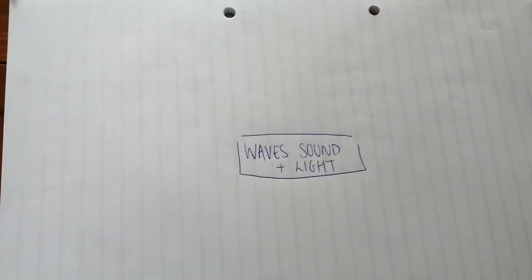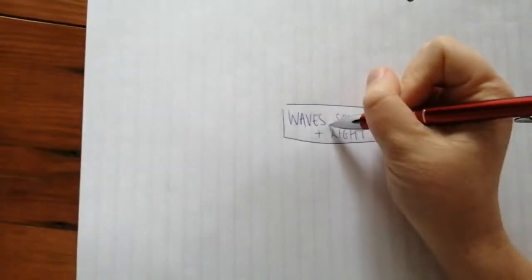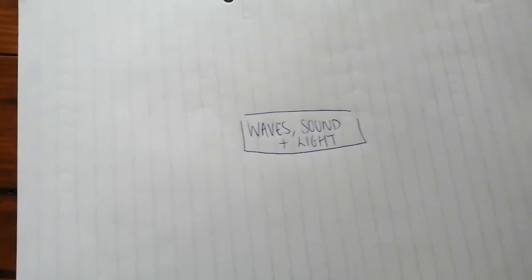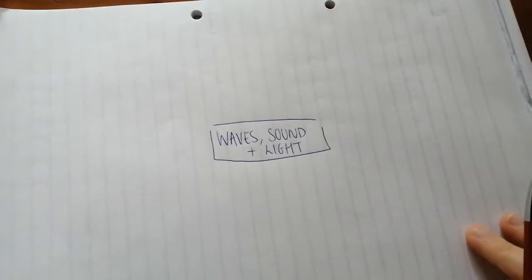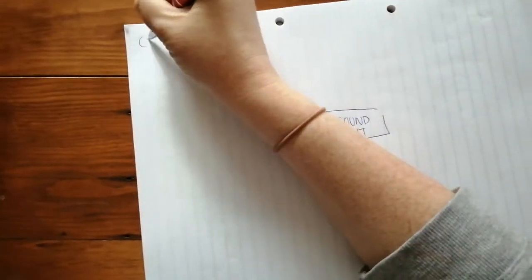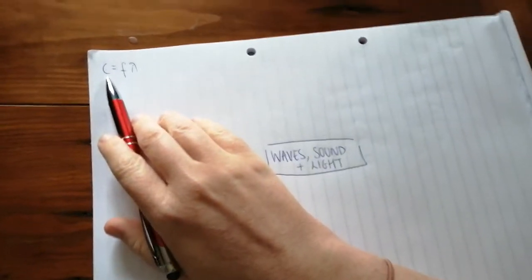Okay, so this week we're going to be looking at the main calculations that come up in the waves, sound and light section of the course. There's lots of theory which is often repeated in this section, but we're just going to be focusing on the maths side of things. So the first thing to focus on is this formula here. So this C is a special C, it's actually the speed of a wave.